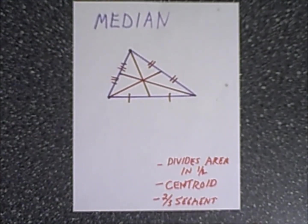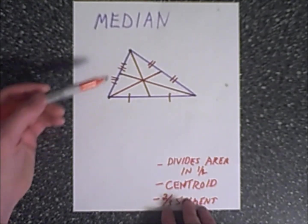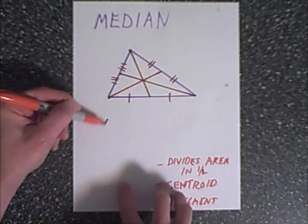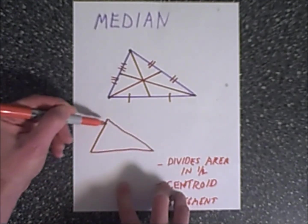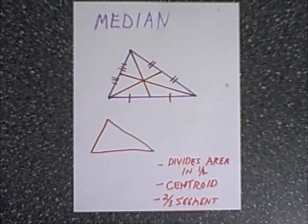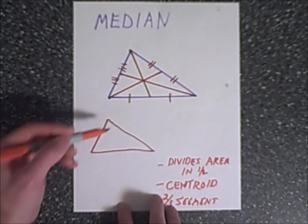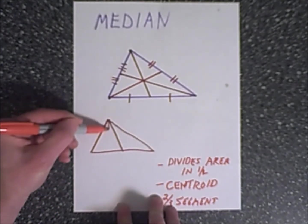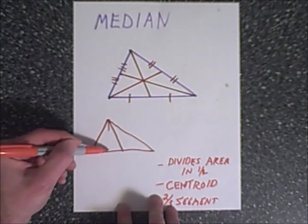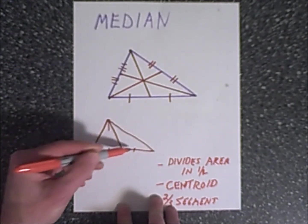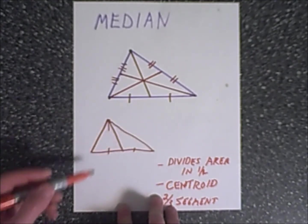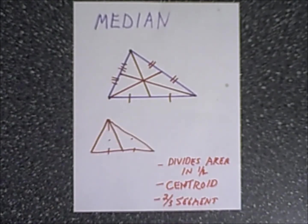A couple of cool things about the median. When you take a median, you're actually cutting the area exactly in half. The area of a triangle is one-half base times height. When we draw our median, the height remains the same and the bases are equal since they were bisected, so these two areas would be identical.